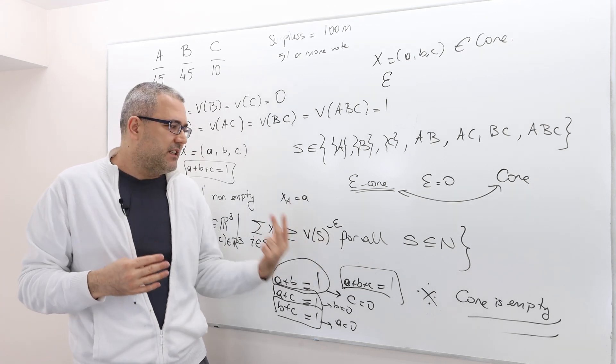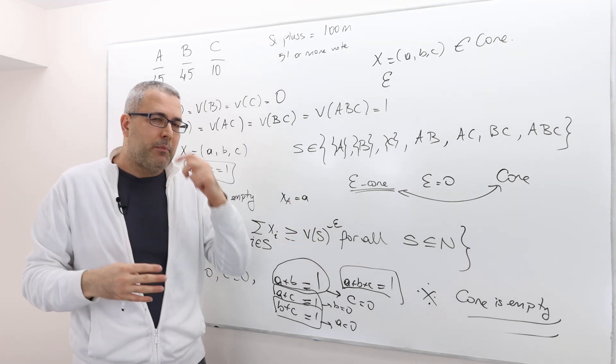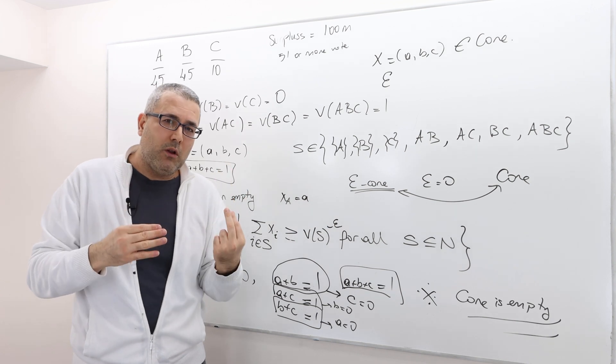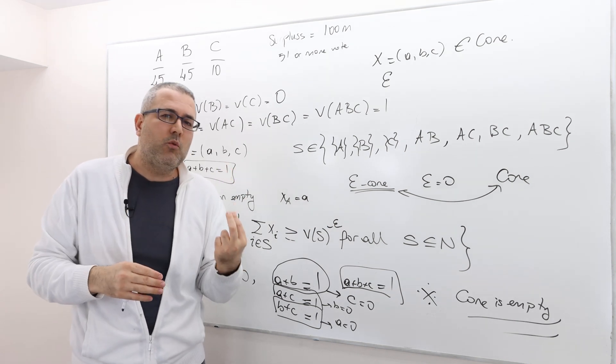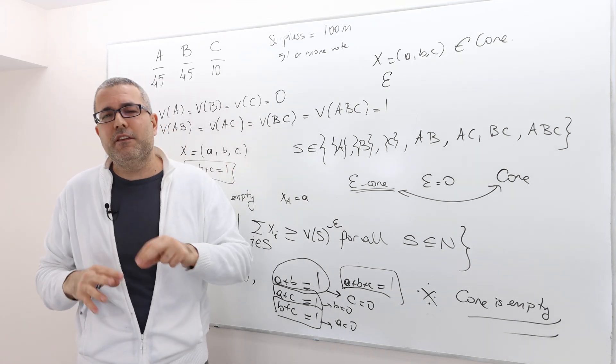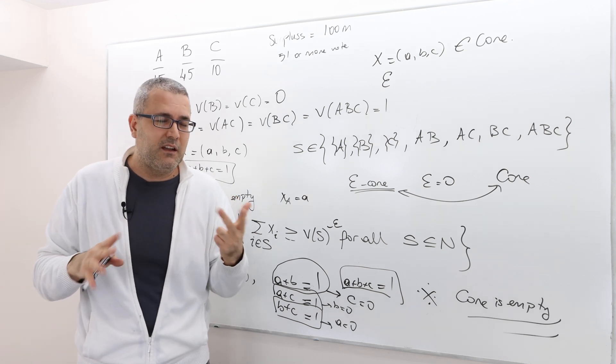So it's like, yes, players have incentive to deviate, but if epsilon is small, not 0, but if it is small, then at least we can say they don't have huge incentive to deviate.